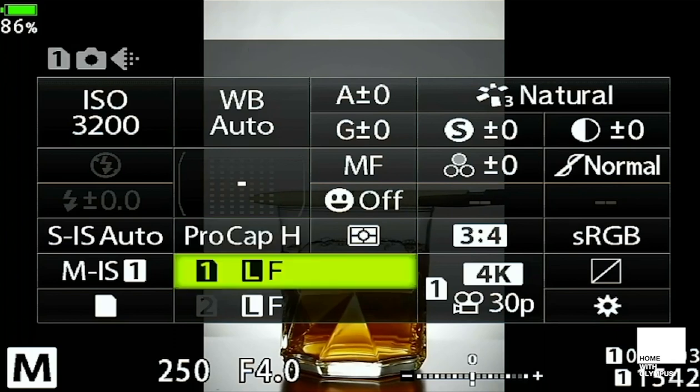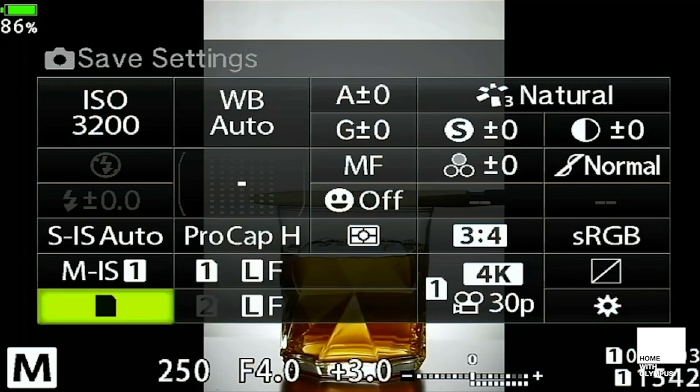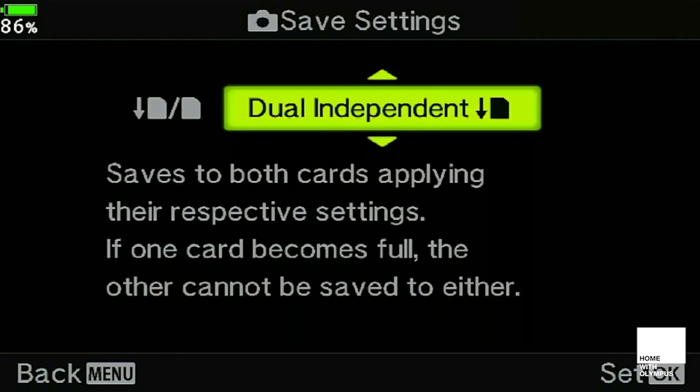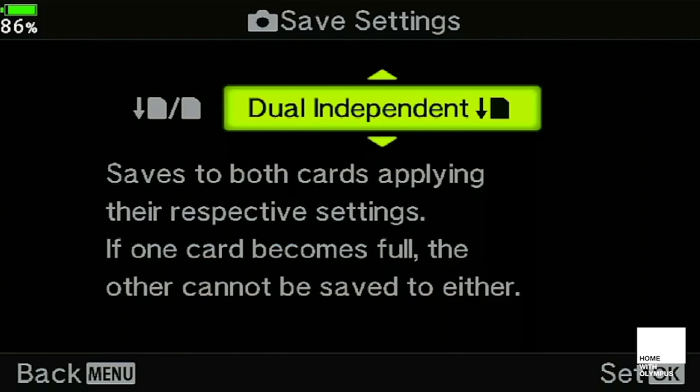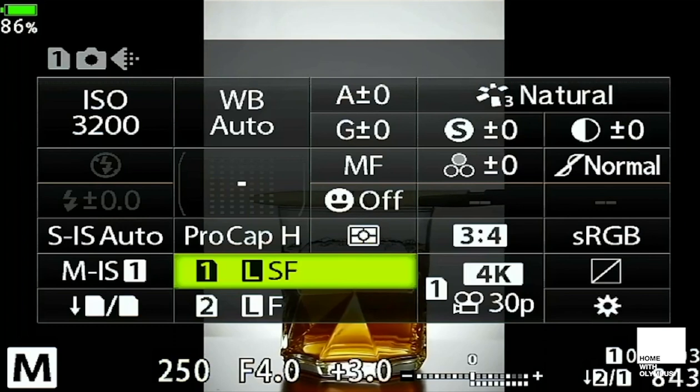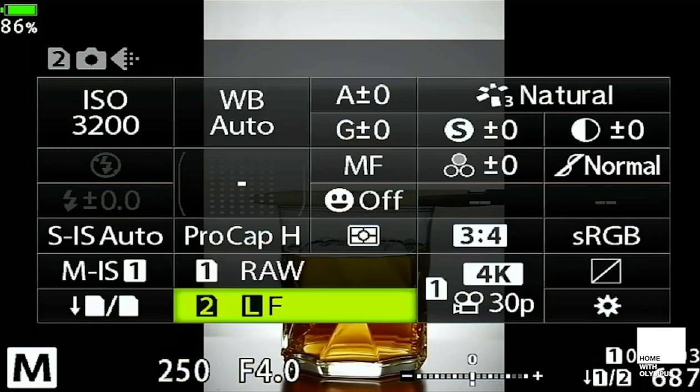I'm now going to change the memory card settings. At the moment I'm shooting in large fine JPEG, so I'm going to go into my memory card settings and ask it to use dual independent, which will give me a choice of using RAW and JPEG in each different card. Once I've done that, I can go back into the super control panel, and my memory card slot one we'll choose RAW there, and we'll have a large super fine JPEG in the second slot.